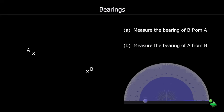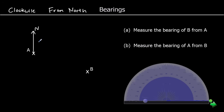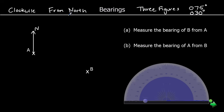A bearing is an angle that's measured clockwise from north, and it's always three figures. So it's always measured clockwise and always from north. A bearing will always be measured clockwise from north. We also need to know that we use three figures — so if it's 75 degrees, we write 075 degrees. If it was 30 degrees, it would be 030 degrees. So we always use three figures for a bearing — clockwise from north and three figures.